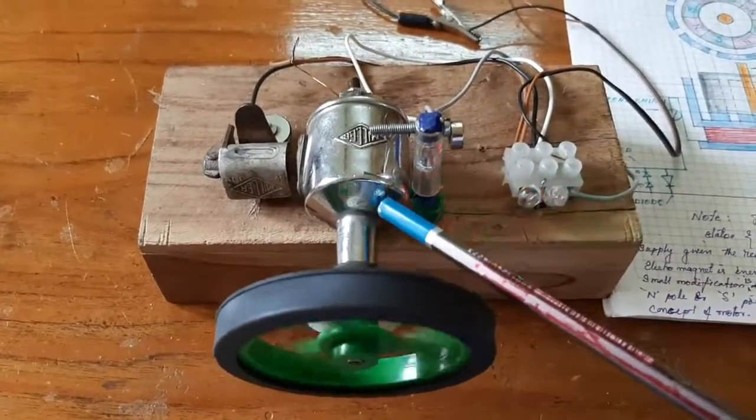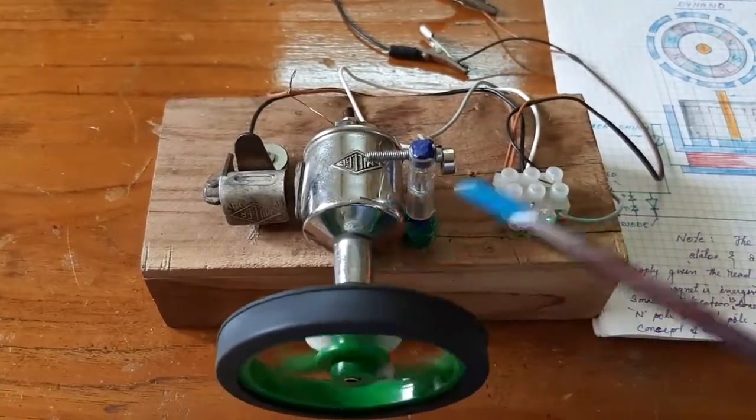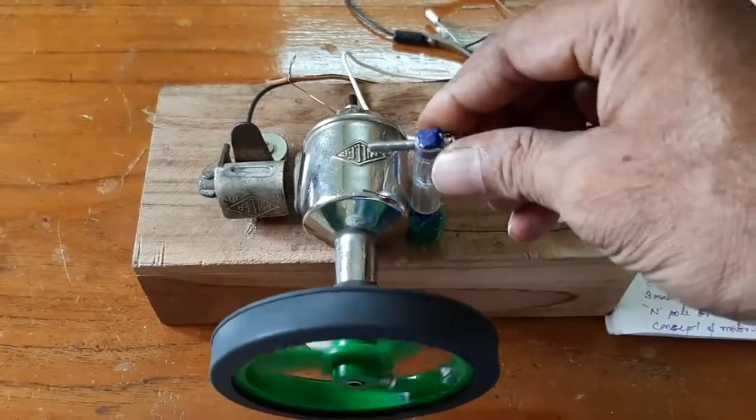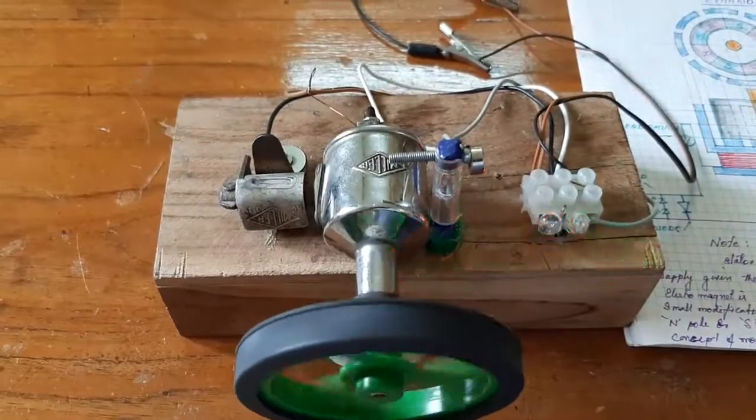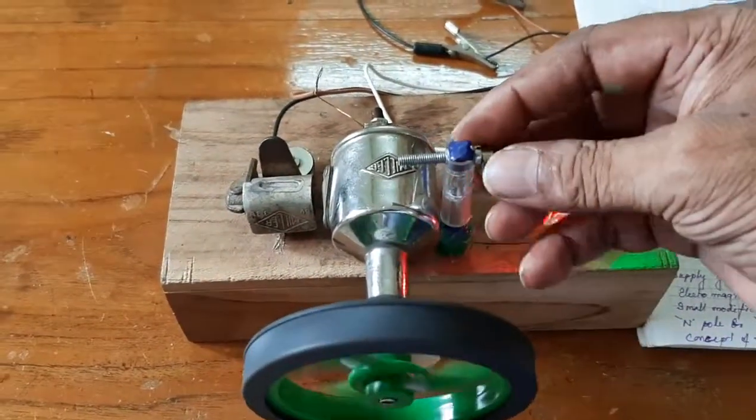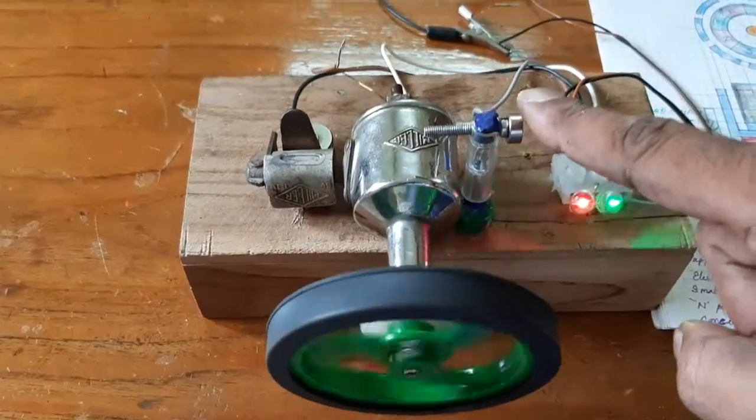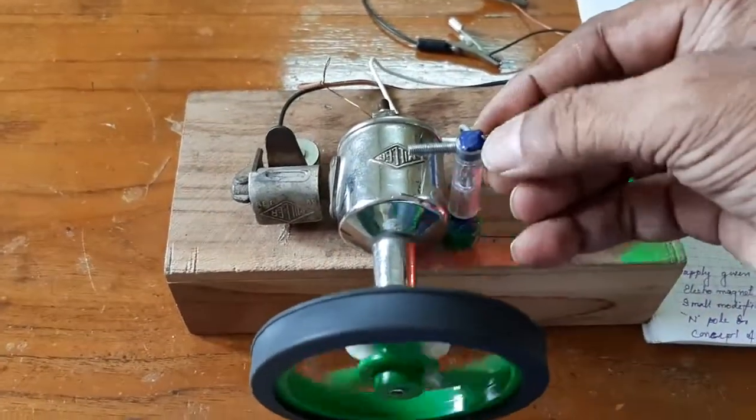The direction of the motor can also be changed by changing the piece of magnet. Look at this. By changing the poles of the piece of magnet, the rotation direction can be changed.